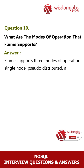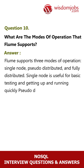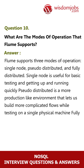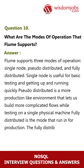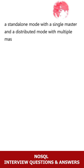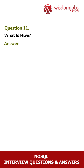Question 10: What are the modes of operation that Flume supports? Answer: Flume supports three modes of operation: single node, pseudo-distributed, and fully distributed. Single node is useful for basic testing and getting up and running quickly. Pseudo-distributed is a more production-like environment that lets us build more complicated flows while testing on a single physical machine. Fully distributed is the mode used for production. The fully distributed mode offers two further sub-modes: a standalone mode with a single master and a distributed mode with multiple masters.